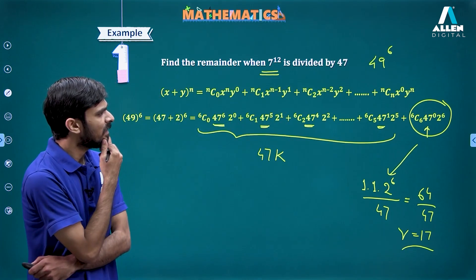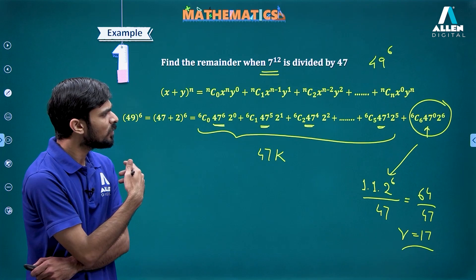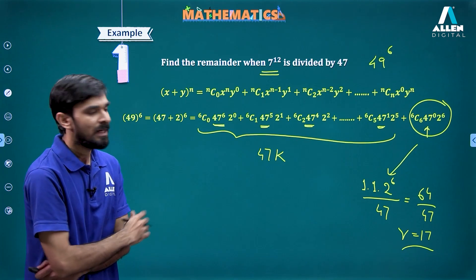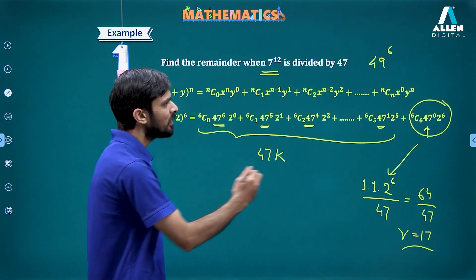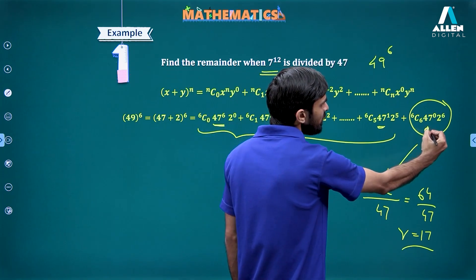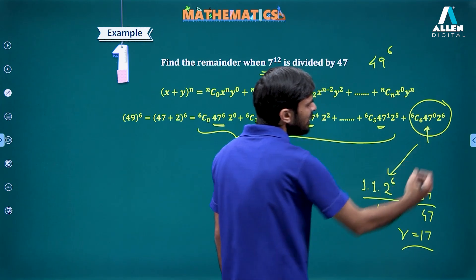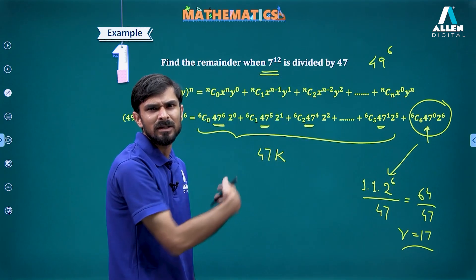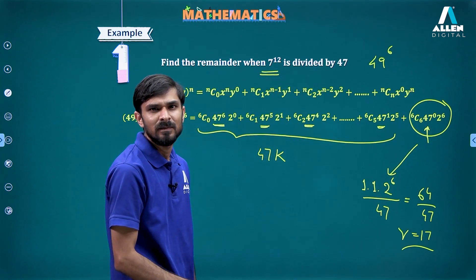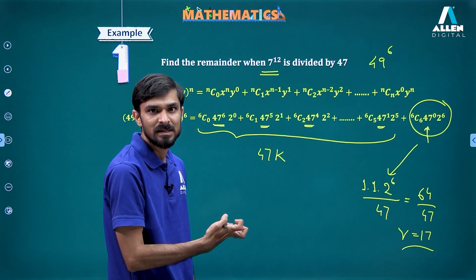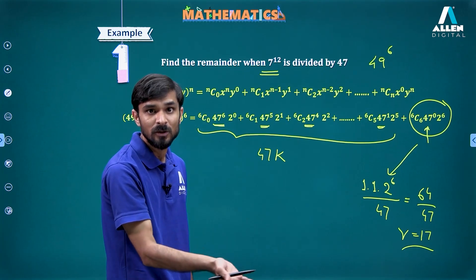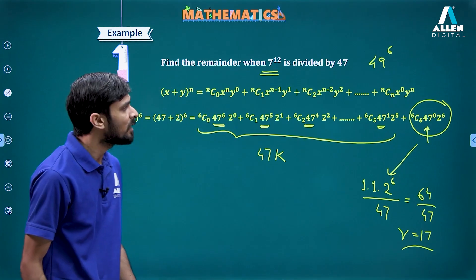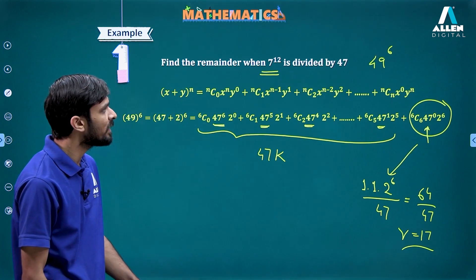Now, do we need to expand every time? Since we know it is only the last term that gives the remainder, we don't have to expand the full expression every time — we can just take out the last term and use it to find the remainder.